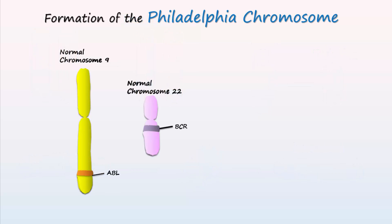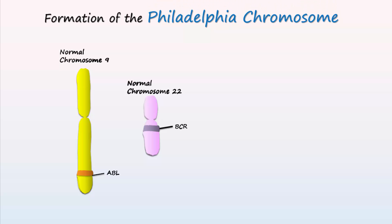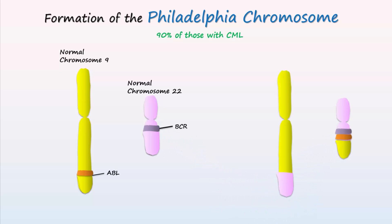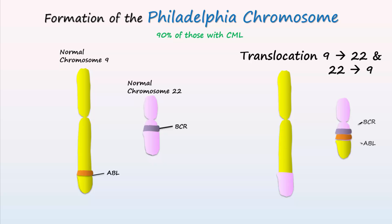One of the most studied translocations is the Philadelphia chromosome, seen in 90% of those with chronic myelogenous leukemia or CML. It forms when breaks at the end of chromosomes 9 and 22 allow the ABL proto-oncogene on chromosome 9 to be translocated to the breakpoint cluster region or BCR on chromosome 22, producing BCR-ABL and the Philadelphia chromosome.